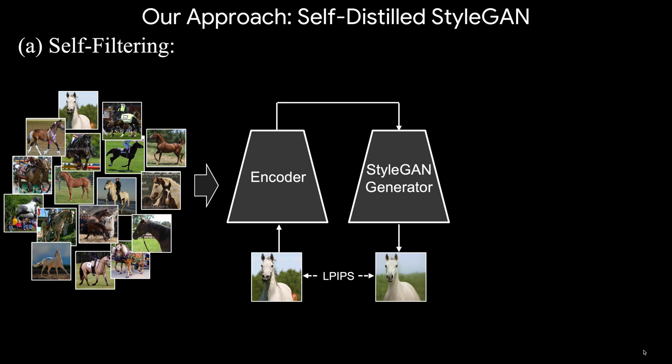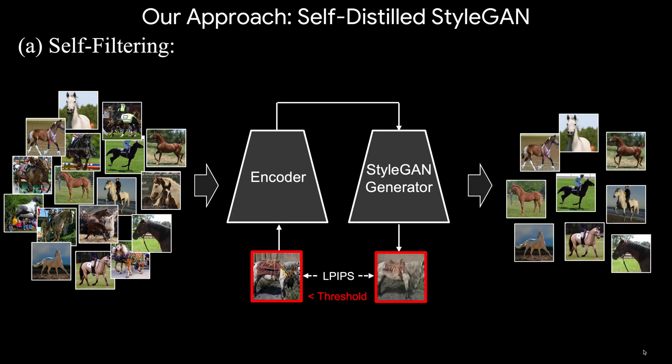Images that pass a certain threshold are kept; images that are below the threshold are rejected. This results in a filtered image collection that is then used to train the final StyleGAN generator from scratch. We set this threshold to obtain a reasonable trade-off between the diversity of the filtered images and the reconstruction quality. For more details on how this threshold is set, please refer to the paper.